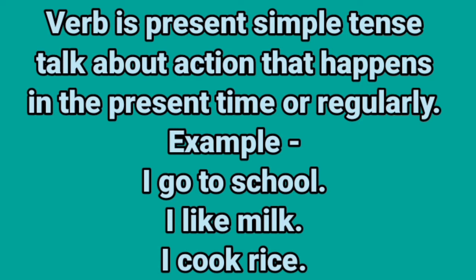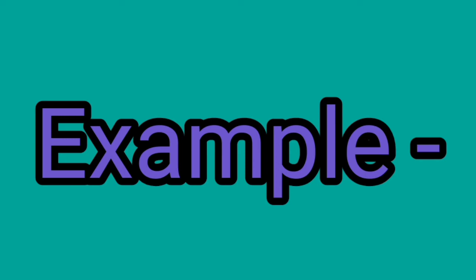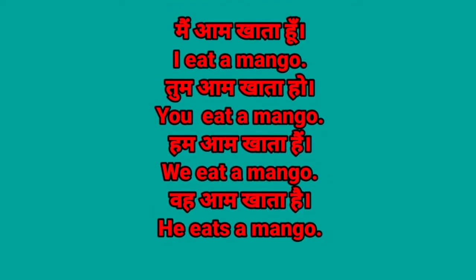Examples of present simple tense: Main aam khata hun — I eat a mango. Tum aam khate ho — You eat a mango. Ham aam khate hain — We eat a mango. Woh aam khata hai — He eats a mango.